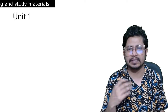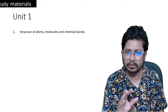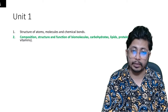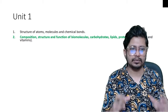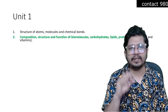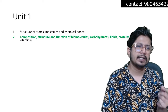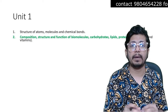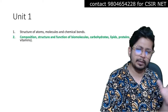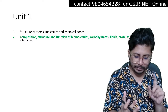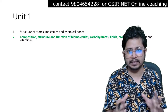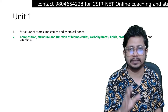Starting with Unit 1 syllabus: the structure of atoms, molecules, and chemical bonds is there. The next is composition, structure, and function of biomolecules. Structure of atoms and molecules is important background for biochemistry but doesn't have direct exam impact. Structure and function of biomolecules is more important — that's why it's green color-coded. Lipids, proteins, nucleic acids like DNA and RNA structures, as well as fatty acid structures — all macromolecules are very very important, marked in green.